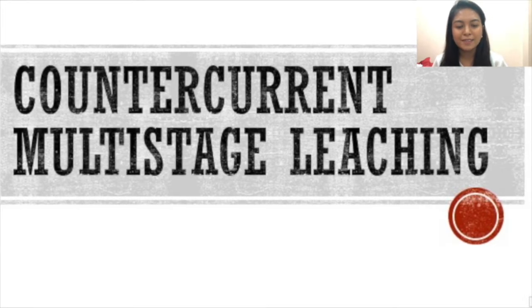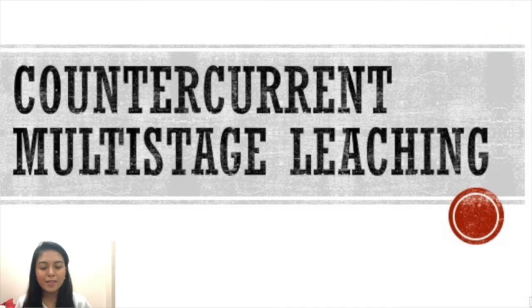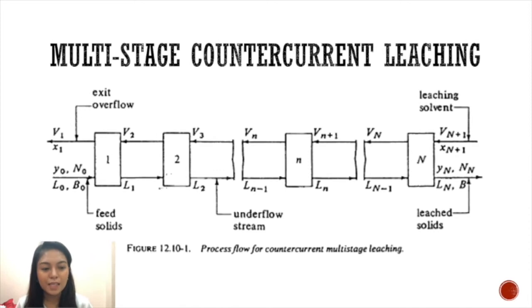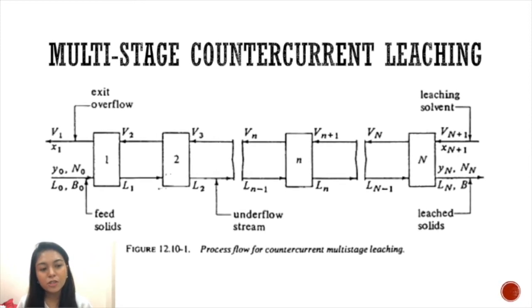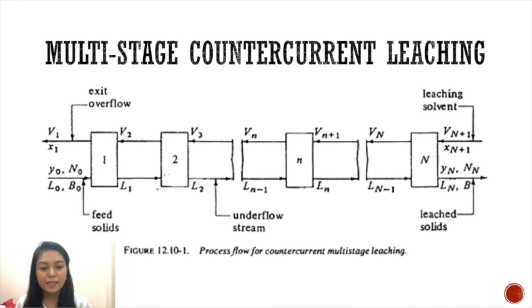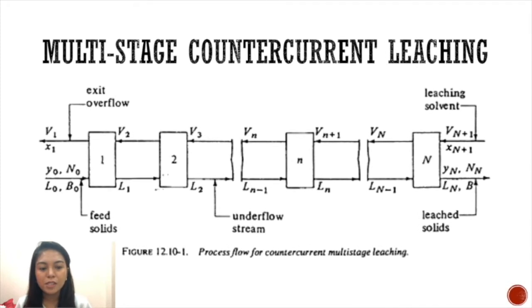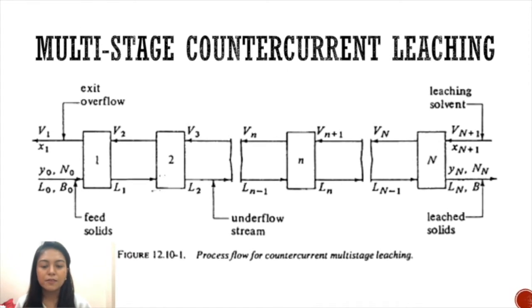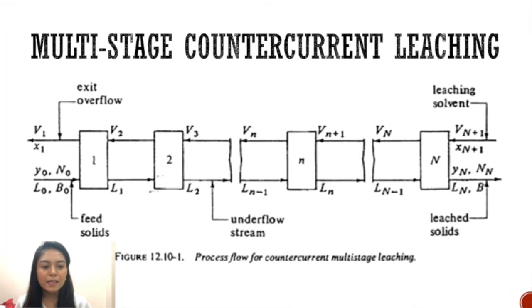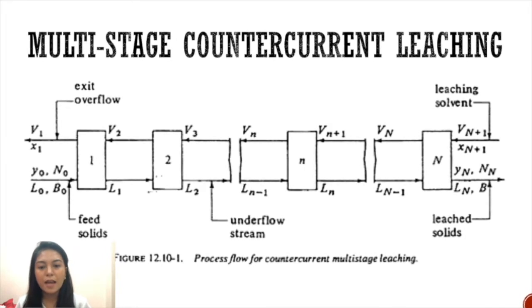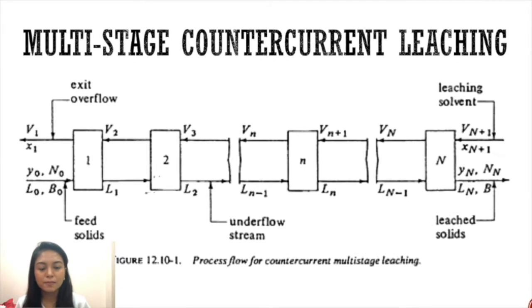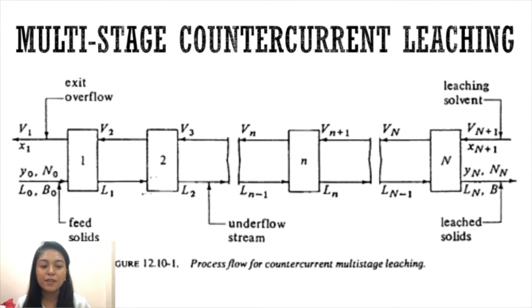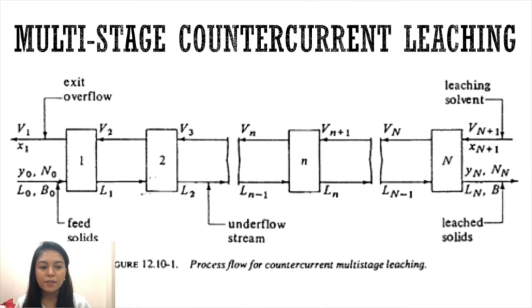On this slide you'll see a figure that shows the process flow for counter current multi-stage leaching. This is similar to liquid-liquid extraction. The ideal stages are numbered in the direction of the solids. The feed solids enter the first stage and the solvent enters the last stage. The final underflow leaves from the last stage and the final overflow leaves from the first stage.